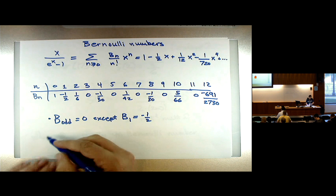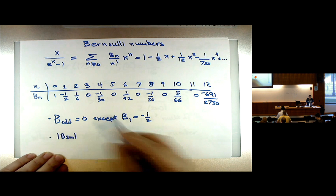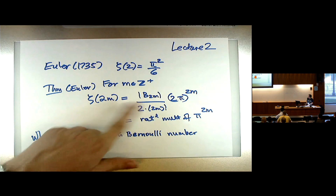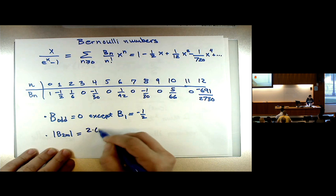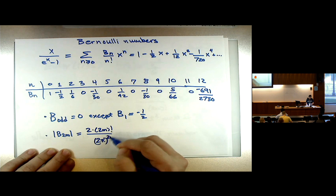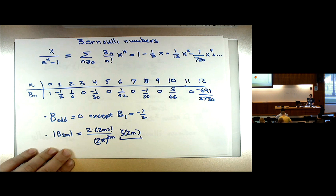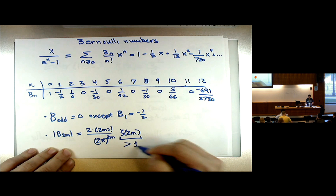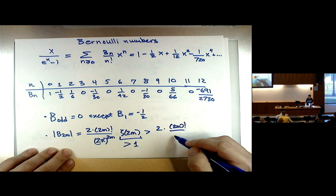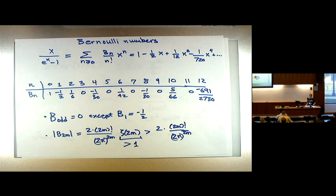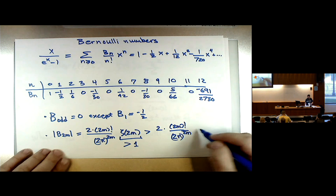One way to see that: if you rewrite the Bernoulli number zeta formula and solve for b_{2m}, you get 2·(2m)! over (2π)^{2m} times zeta(2m). Because zeta(2m) is a series 1 + 1/2^{2m} + 1/3^{2m} + …, it is greater than 1. So this is at least as big as 2·(2m)! over (2π)^{2m}. As you remember from calculus, x^n over n! goes to 0, so n! over x^n goes to infinity — this goes to infinity with m.